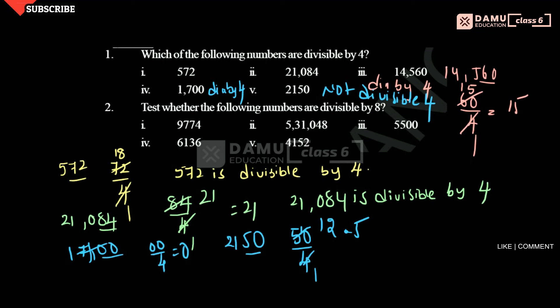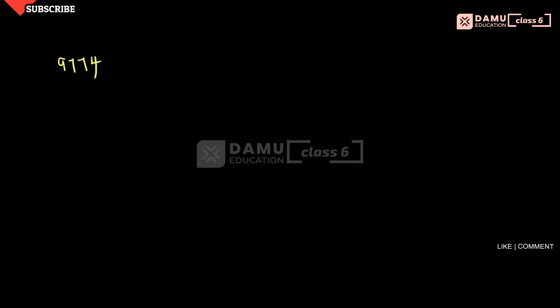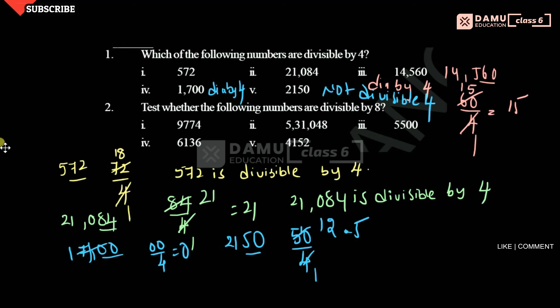Next, test whether the following numbers are divisible by 8 or not. The first number is 9774. The divisibility rule for 8 is: the last three digits should be divisible by 8.